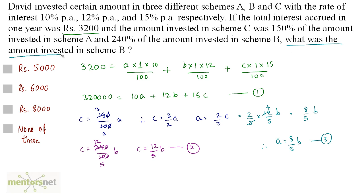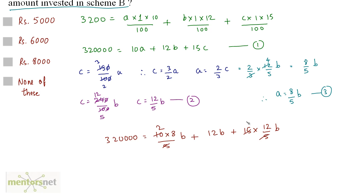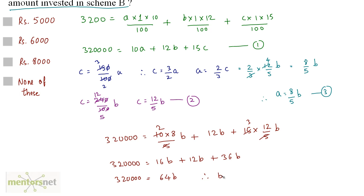Now we want the amount invested in scheme B. Putting the values of C (equation 2) and A (equation 3) into equation 1: 320,000 equals 10 times 8/5 B plus 12B plus 15 times 12/5 B. Simplifying, 64B equals 320,000. Therefore B equals 320,000 divided by 64, which equals Rs. 5,000.